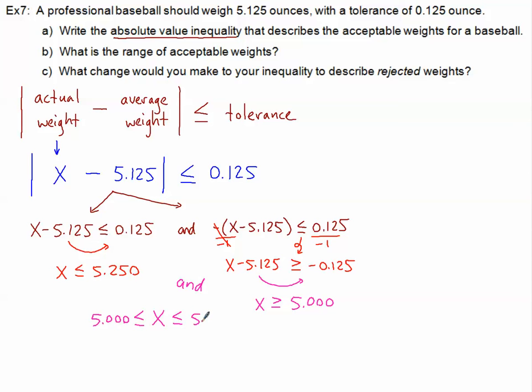So I'm going to put X in between these two values, the 5.000 ounces and the 5.250 ounces. And I like word problems to end in words. So that is our acceptable weights for a professional baseball, somewhere between 5 ounces and 5.25 ounces. So we've answered part A, and we've answered part B.